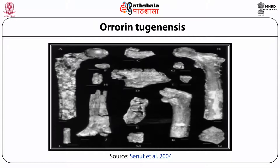Orrorin. This species was named in July 2001 from fossils discovered in western Kenya, dated 6 million years ago. The fossils include fragmentary arm and thigh bones, lower jaws, and teeth. The limb bones are about the size of a female chimpanzee. Its finders claimed that Orrorin was a human ancestor adapted to both bipedality and tree climbing, and that Australopithecus are an extinct offshoot. A later study in 2004 found further evidence of bipedality in the fossil femur.